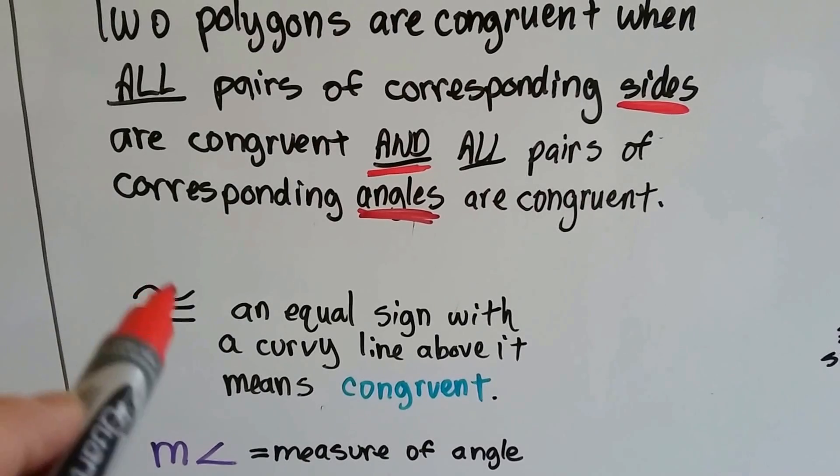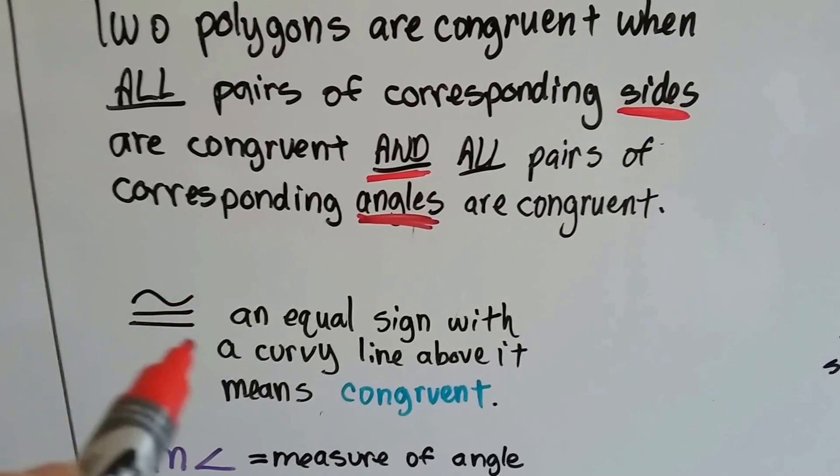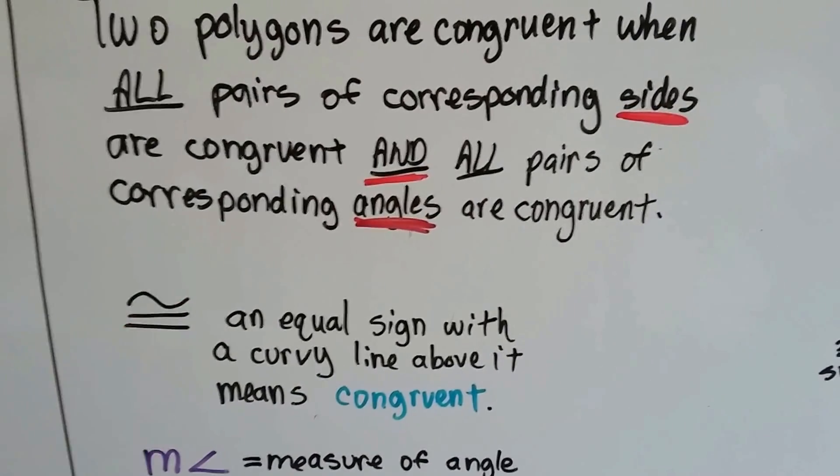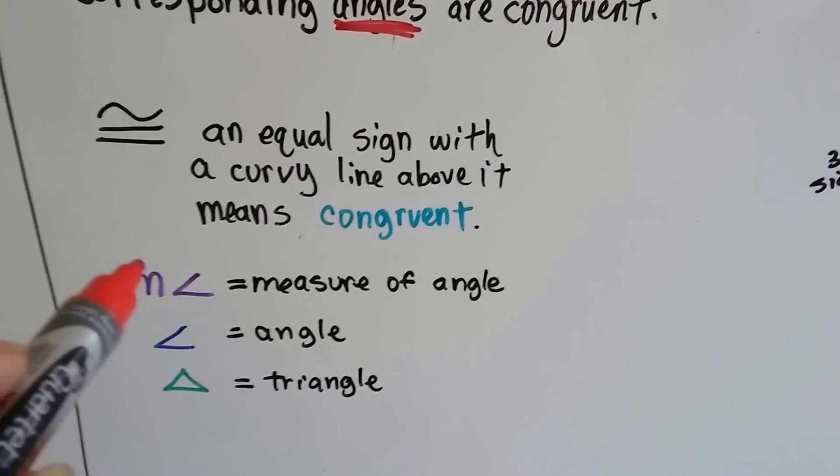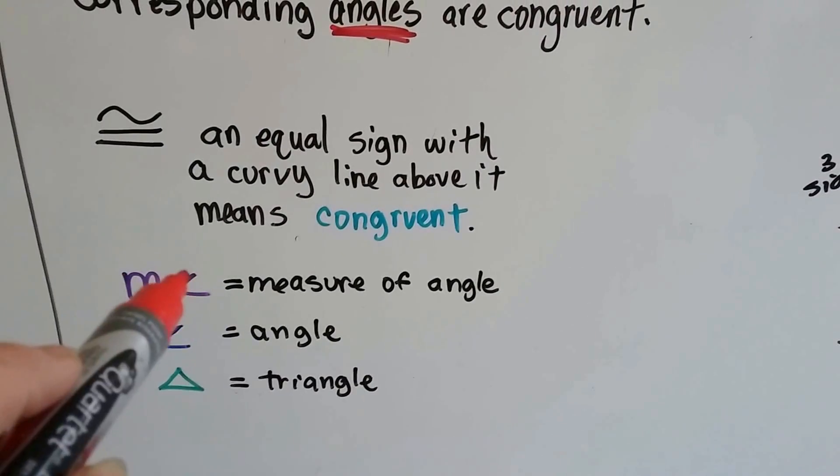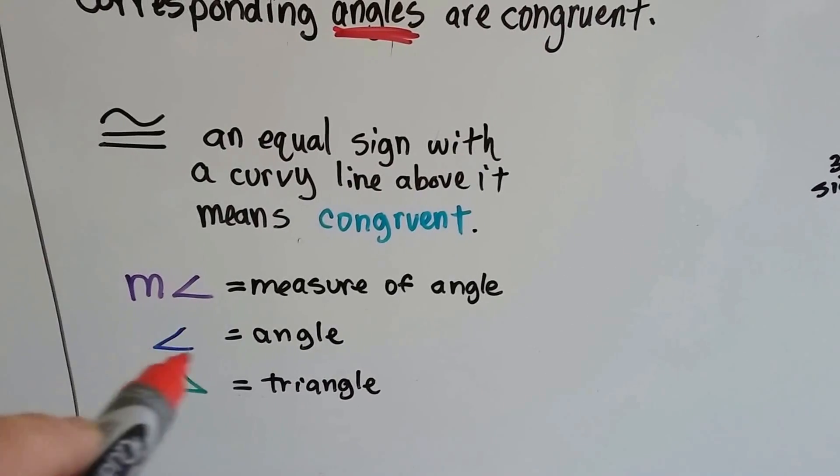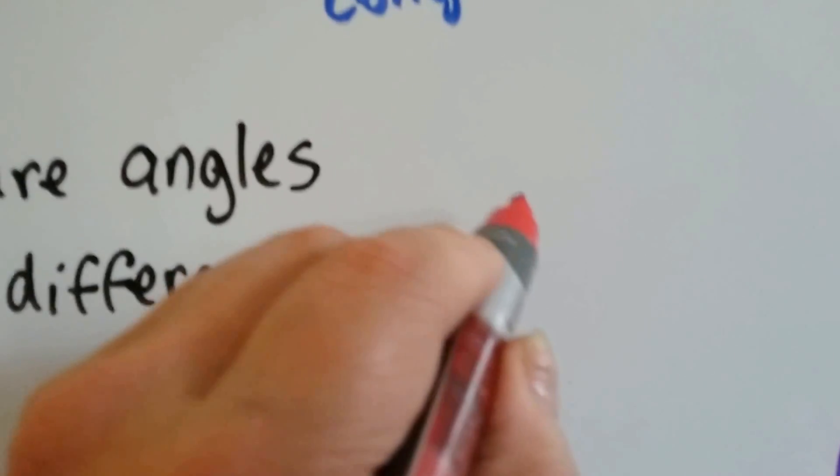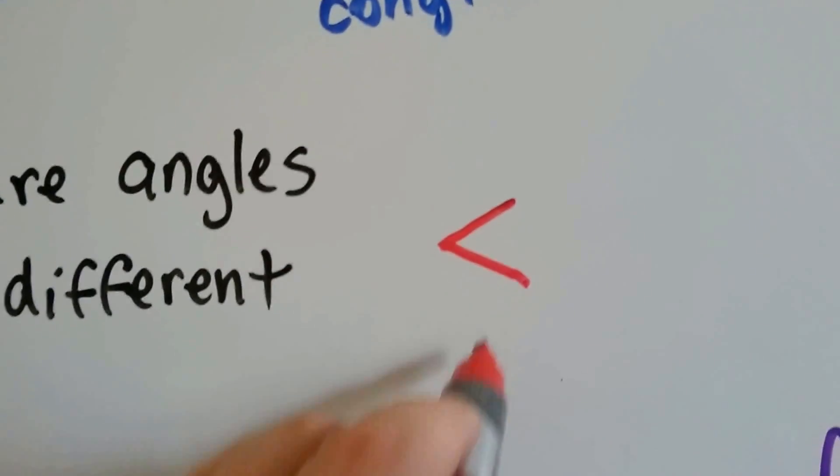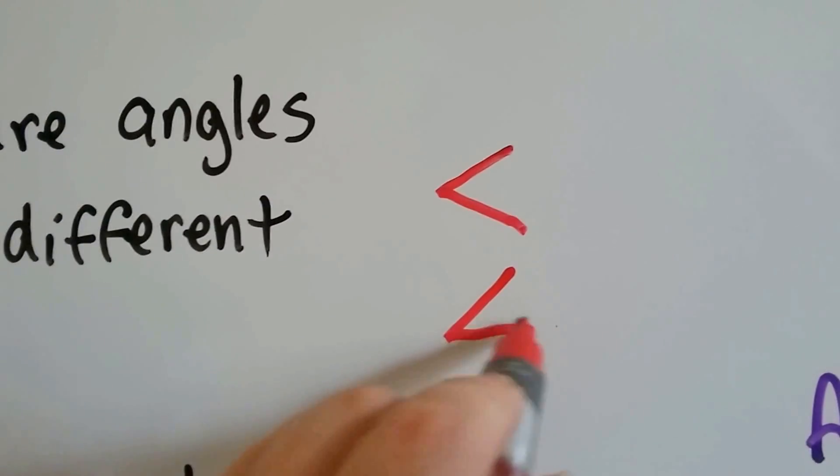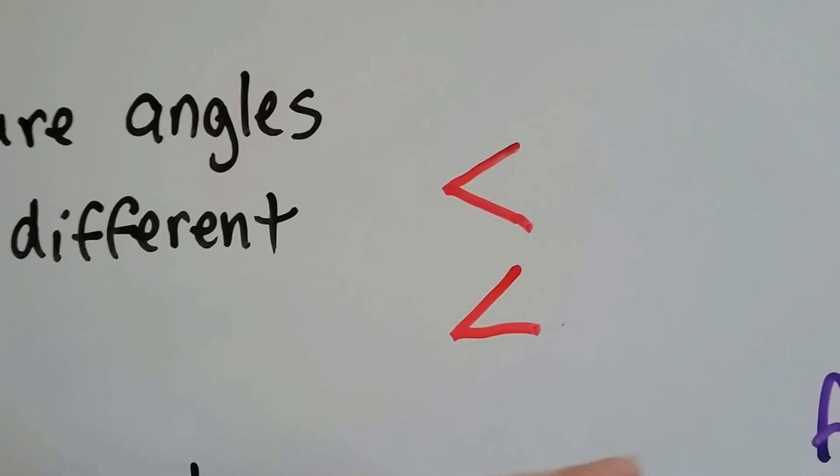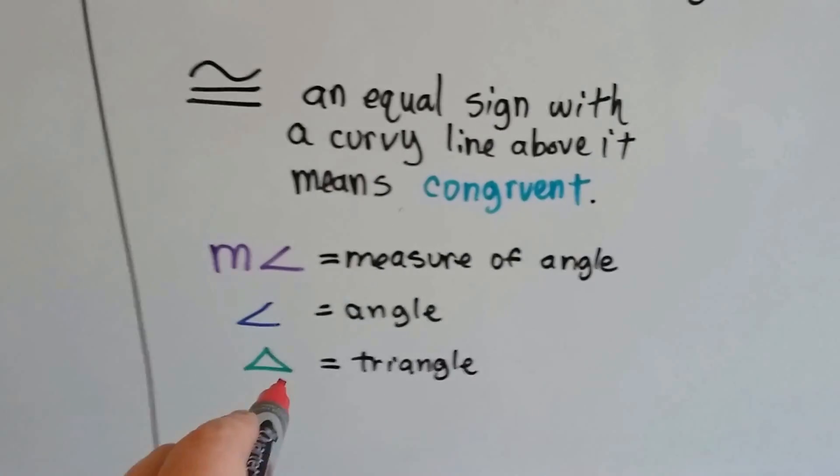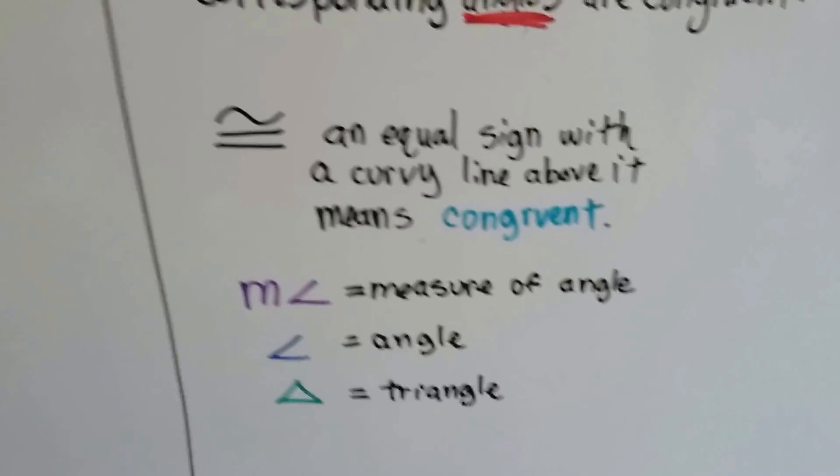When you see an equal sign with a wave on top of it, this curvy line, that means congruent. That's the symbol for congruent. Remember from the last video, an M with this angle means measure of an angle? And if you just see this, it means angle. Now don't confuse it with a less than, greater than sign because the less than, greater than sign kind of floats in the air like that, where the angle one is flat on the bottom like that. It lays flat on the line. And then a little triangle means triangle. That's pretty simple, isn't it?